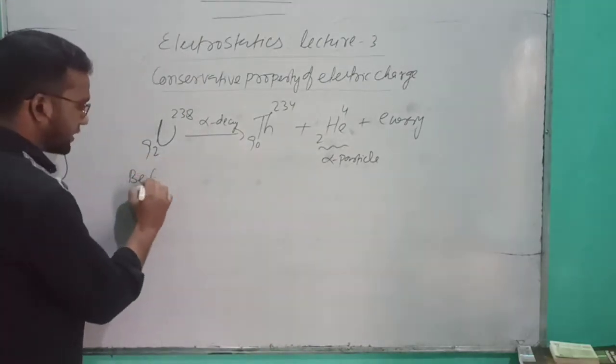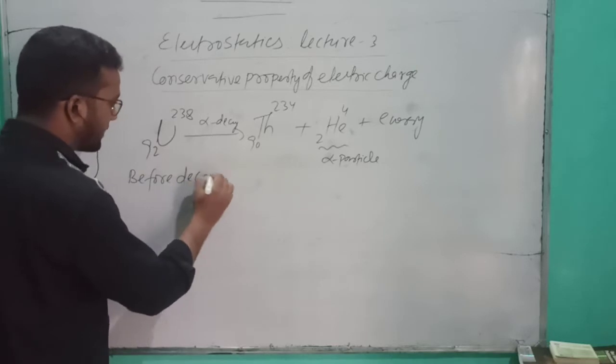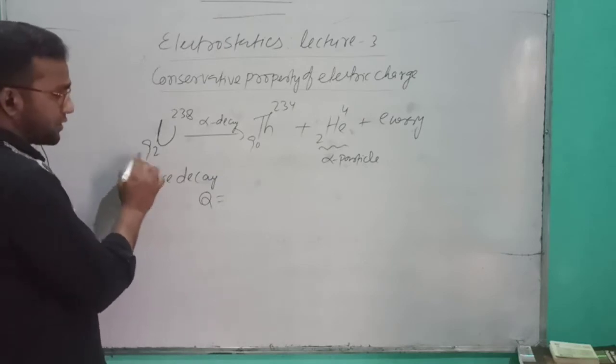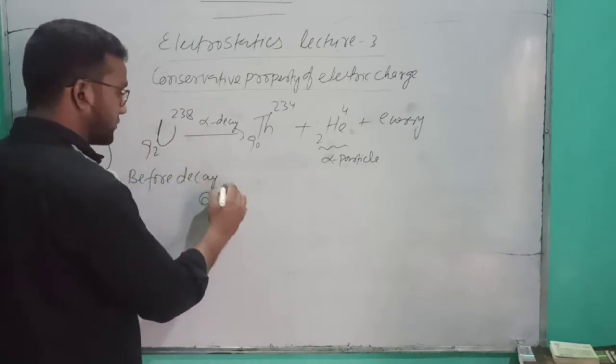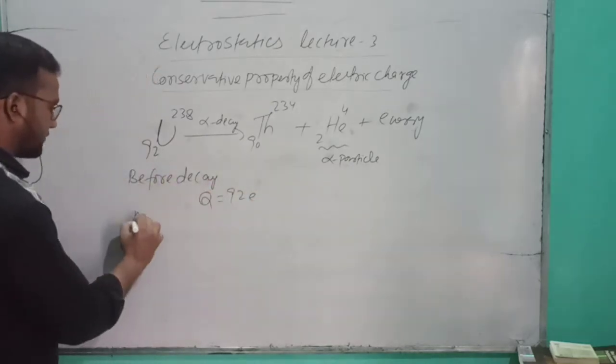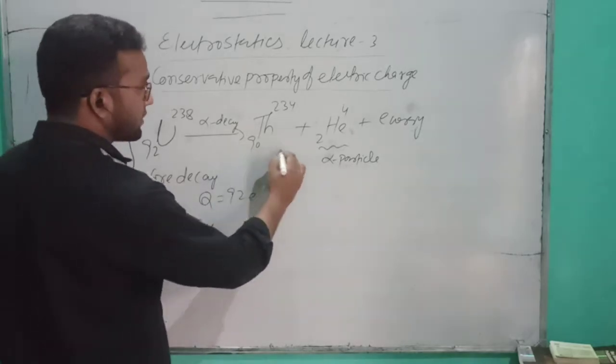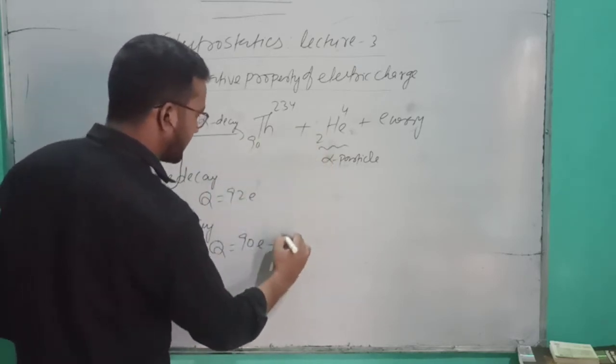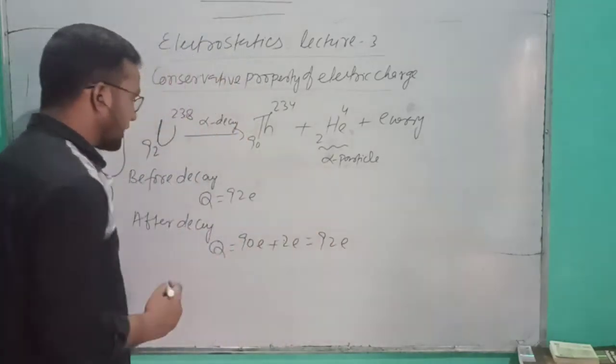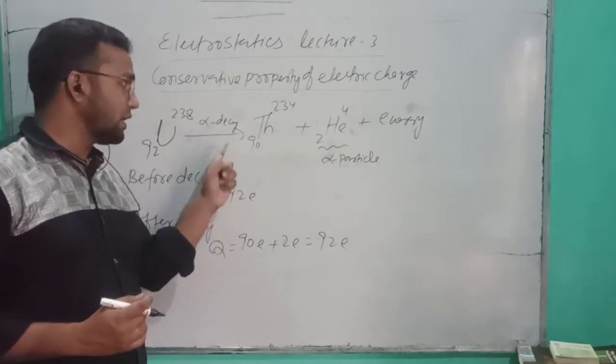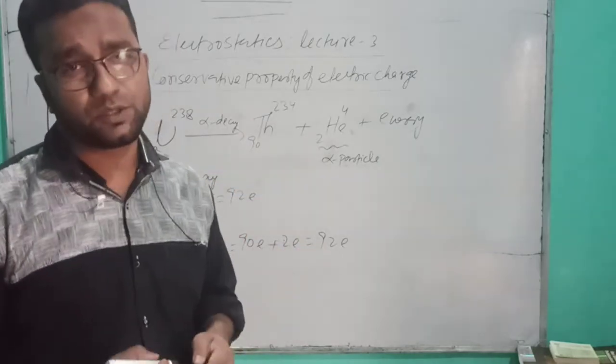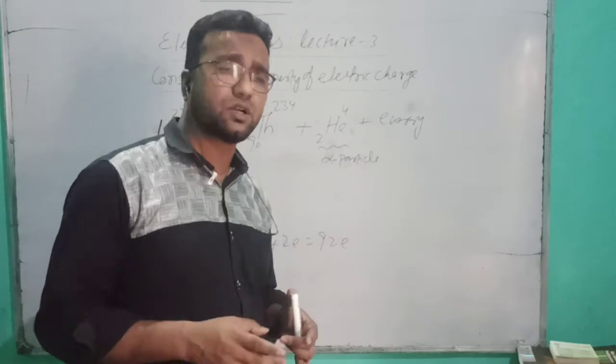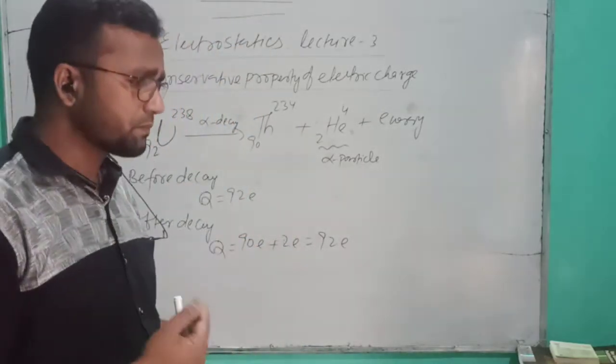Therefore, in alpha decay, before decay we have total charge. Here is the proton, 92 protons, so 92e. Now after decay, after decay this system has total charge 90e plus 2e. 90e before decay, total charge 92e. After decay, 92e. This is the theory that total charge cannot be destroyed, only we can transfer from one body to another. Now we can see in this process.